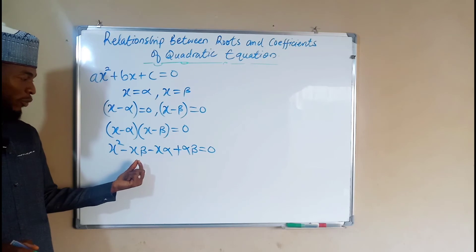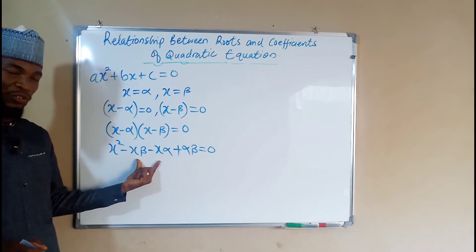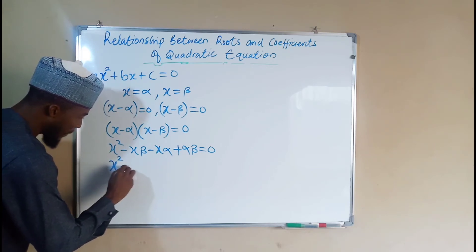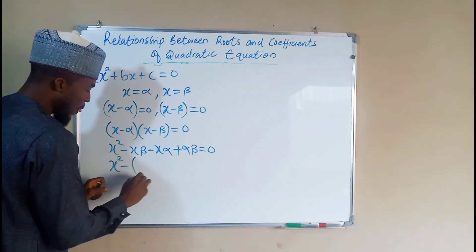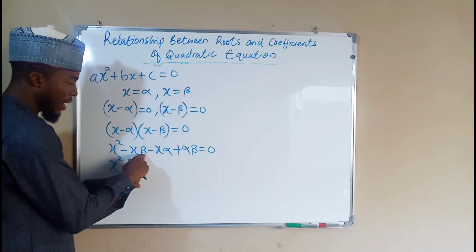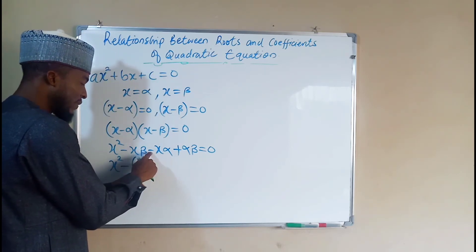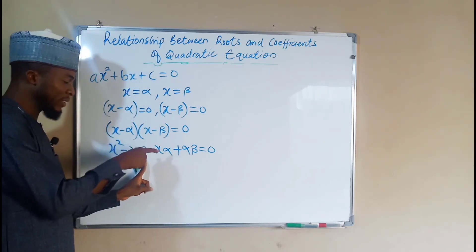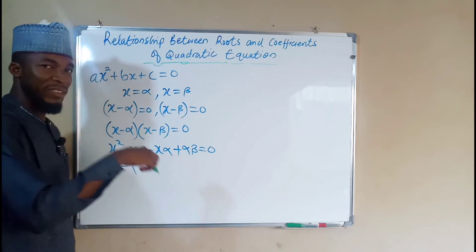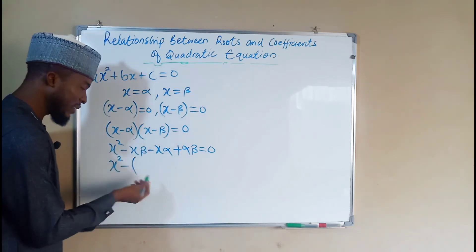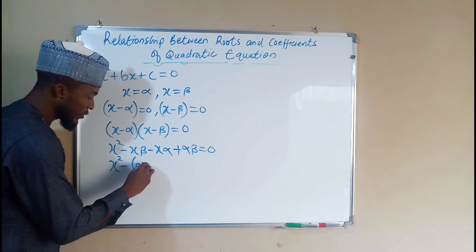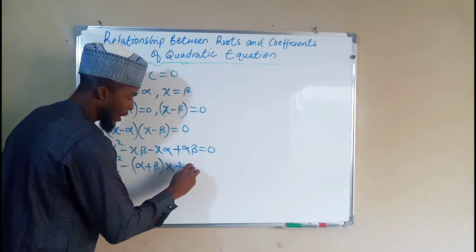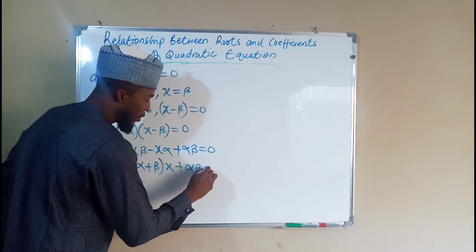We have four terms, but the two middle terms contain x which we can factor out. So we get x² minus (beta + alpha)·x plus alpha·beta. By commutativity, beta + alpha is the same as alpha + beta. So we have x² - (alpha + beta)·x + alpha·beta = 0.